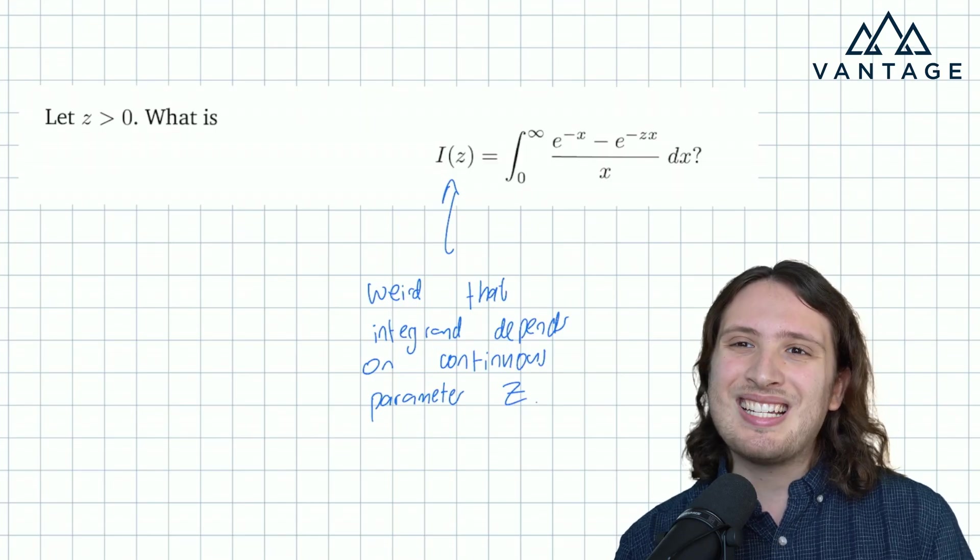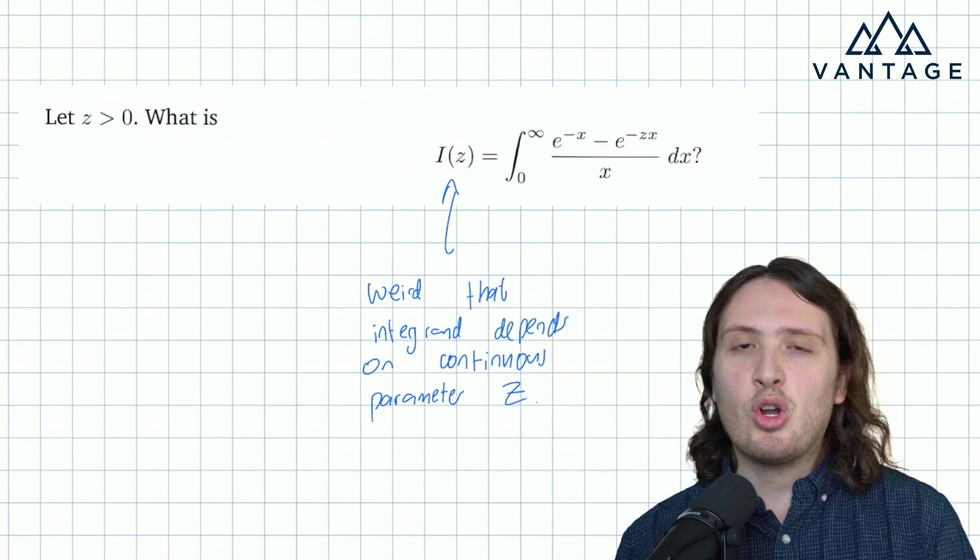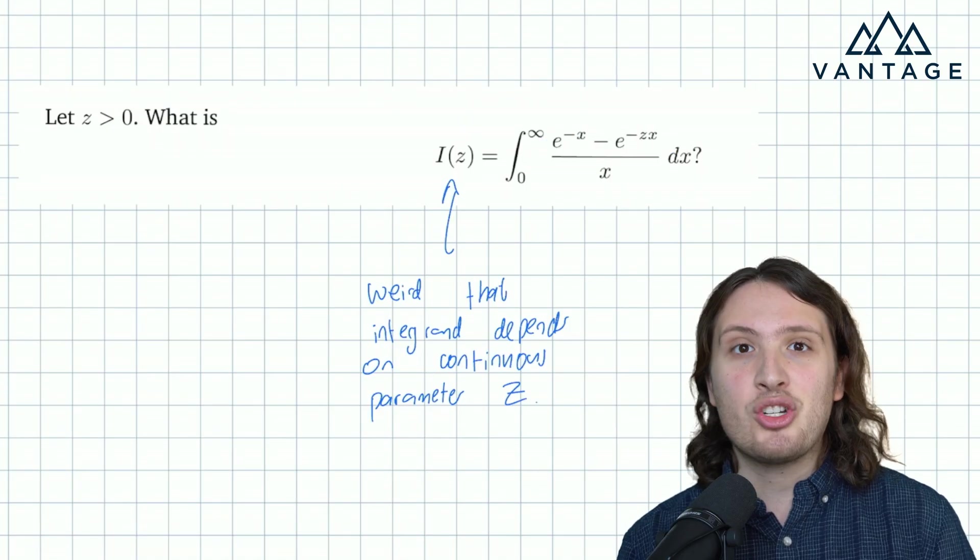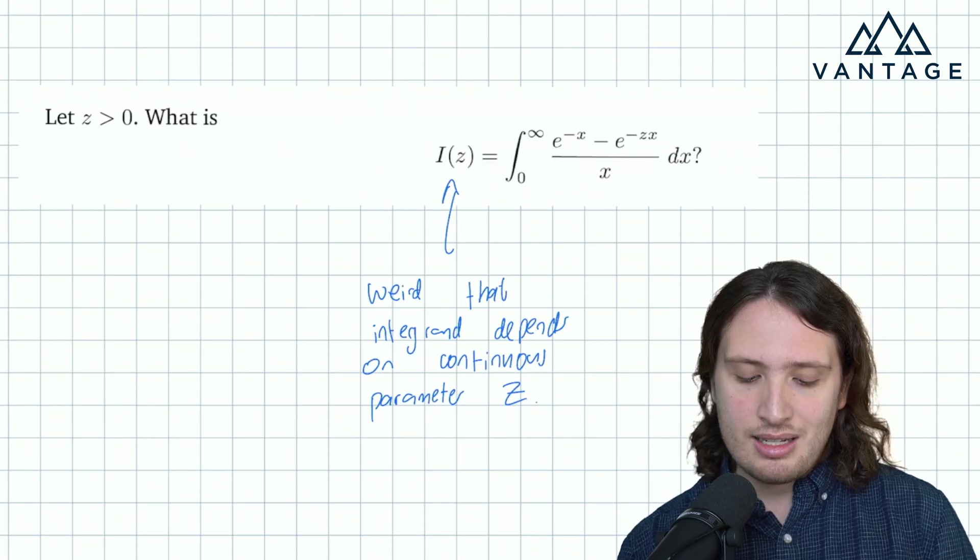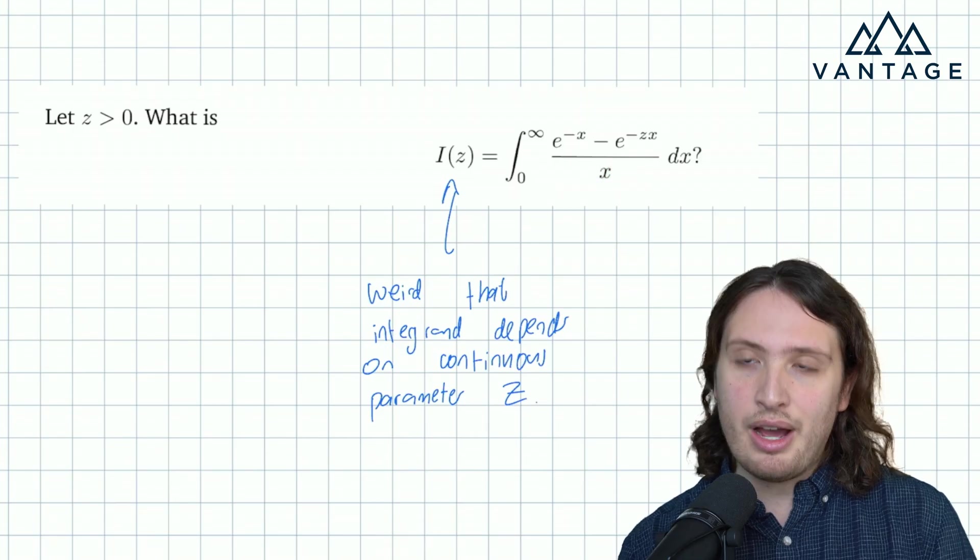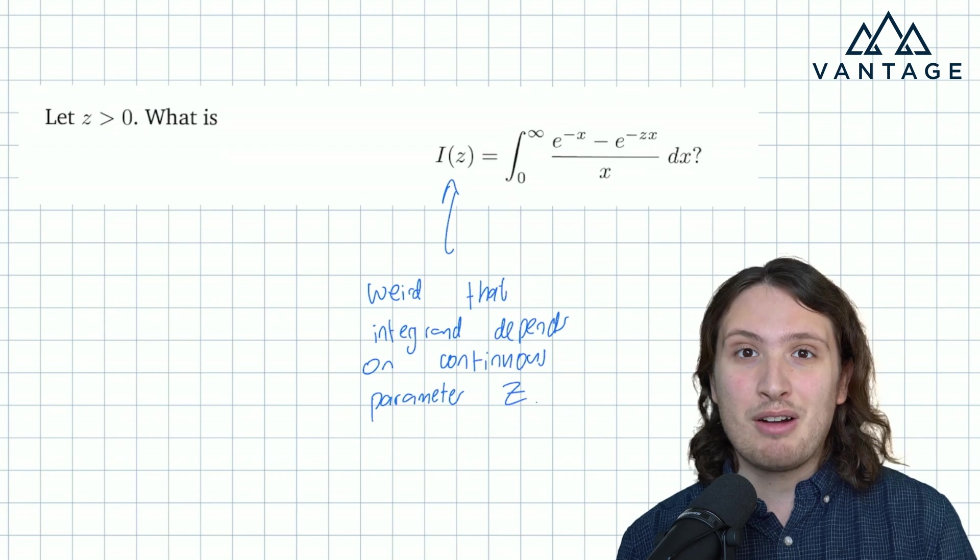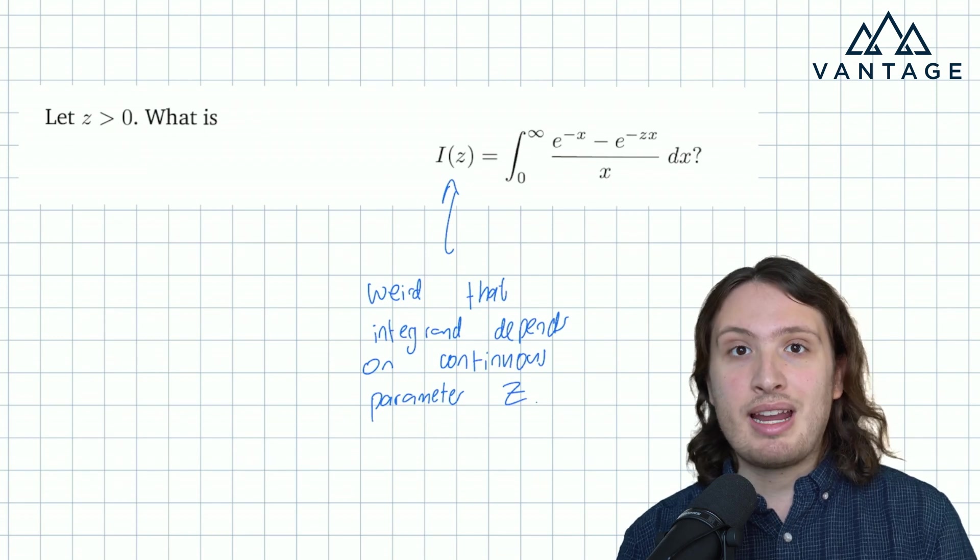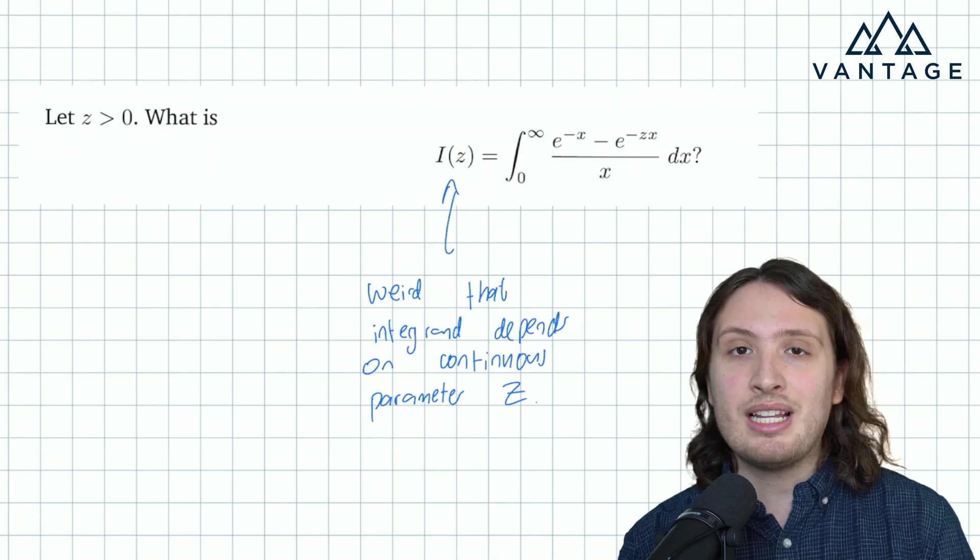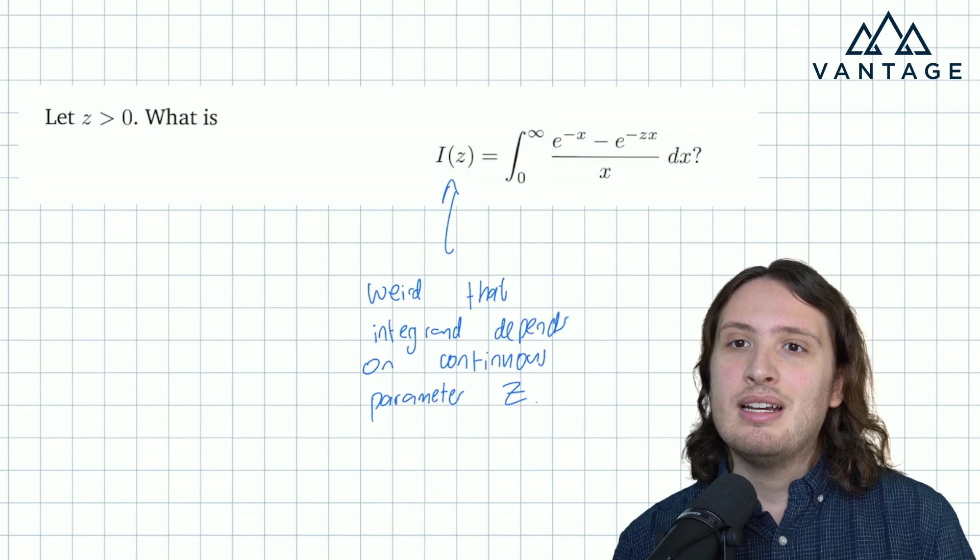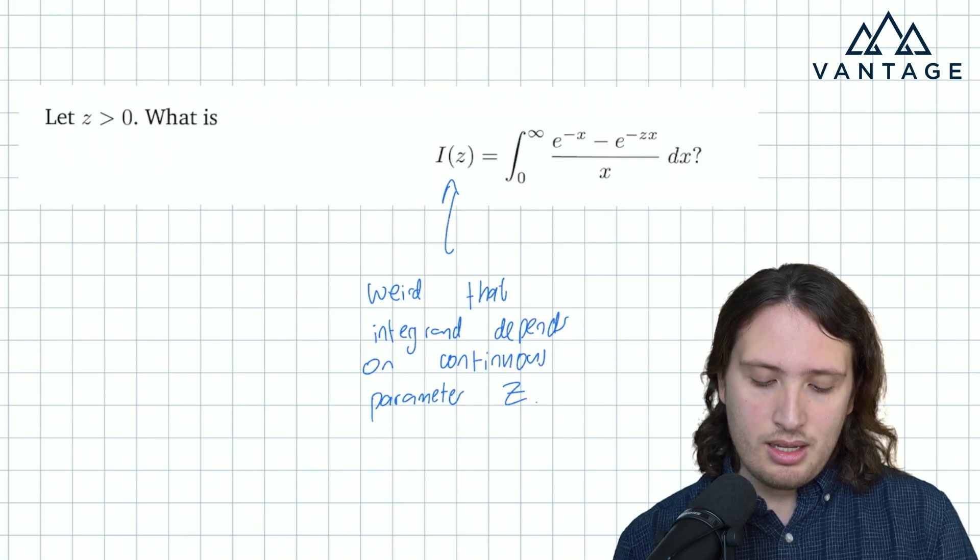And I guess the other thing is, why is this a challenging integral at all? Well, if it was just an e to the minus x, or an e to the minus zx, exponentials are really easy to integrate. So the thing that makes this a slightly nasty integral is the presence of an over x. That x on the denominator completely spoils our ability to just integrate this thing by inspection. So we've identified what makes the integral challenging, we therefore know where to target our efforts, and we've also identified what is special, what is unusual.